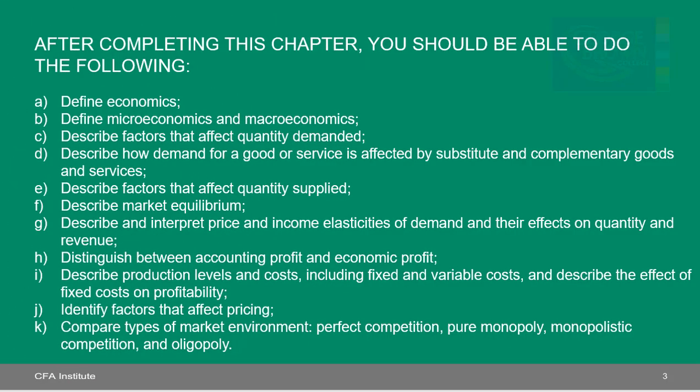Here are the 11 learning outcome statements for Chapter 4, Module 3, Microeconomics. A: define economics. B: define microeconomics and macroeconomics. C: describe factors that affect quantity demanded. D: describe how demand for a good or service is affected by substitute and complementary goods and services. E: describe factors that affect quantity supplied. F: describe market equilibrium. G: describe and interpret price and income elasticities of demand and their effects on quantity and revenue. H: distinguish between accounting profit and economic profit. I: describe production levels and costs, including fixed and variable costs, and describe the effect of fixed costs on profitability. J: identify factors that affect pricing. And K: compare types of market environment — perfect competition, perfect monopoly, monopolistic competition, and oligopoly.